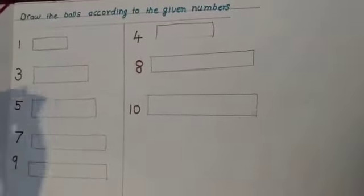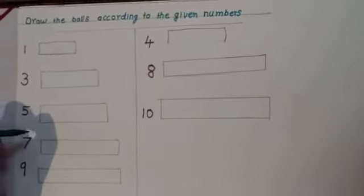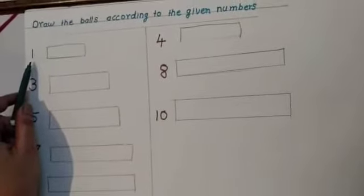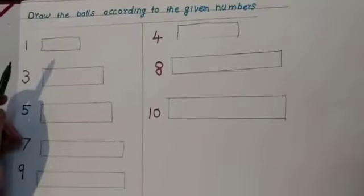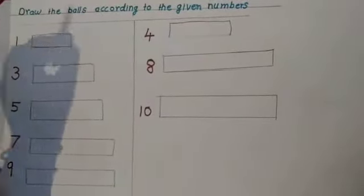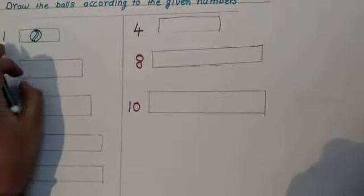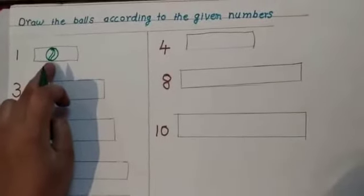So kids, look here. I have already written numbers randomly. Which number is this? Number 1. So, how many balls do you have to draw here? 1. Look here. Dekho, yahan pe number 1 hai toh maine one ball draw ki hai.